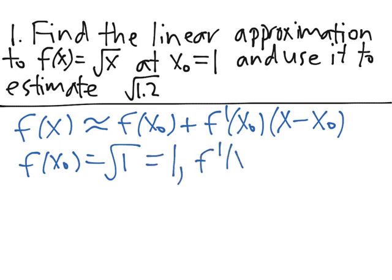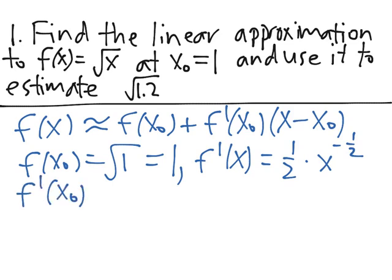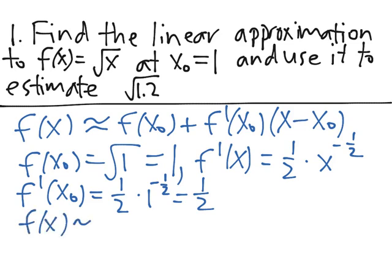f′(x) = 1/2 · x^(−1/2), since √x = x^(1/2). This means f′(x₀) = 1/2 · 1^(−1/2) = 1/2. So our equation becomes f(x) ≈ 1 + 1/2 · (x − 1).